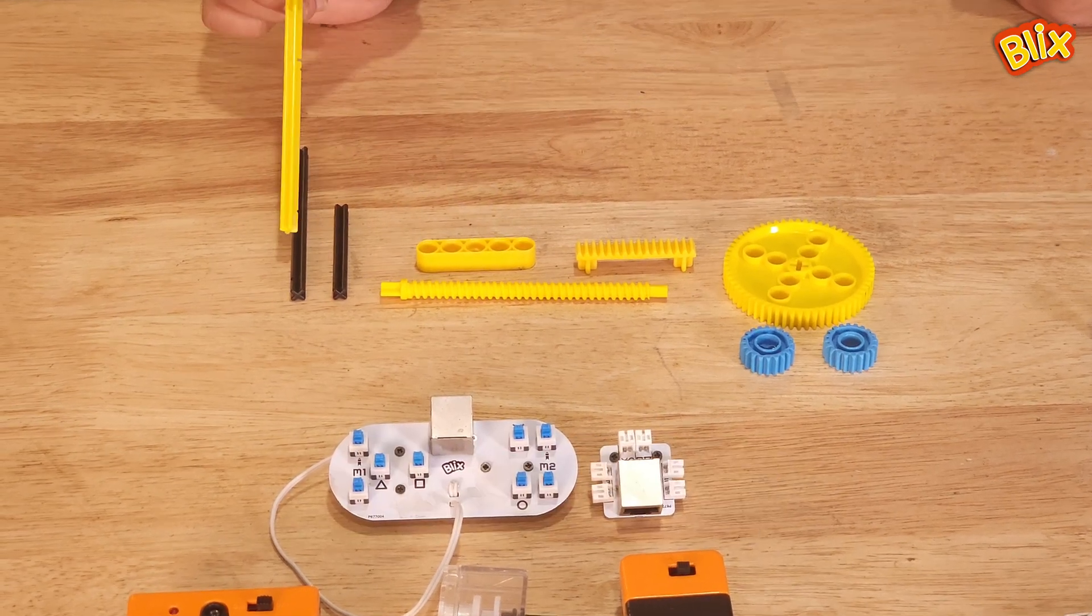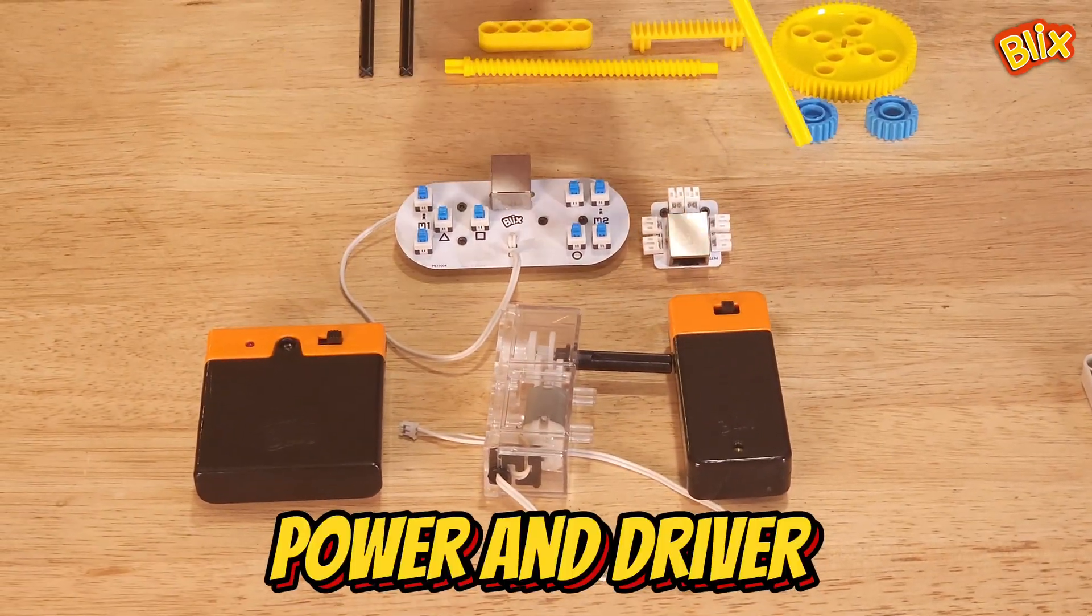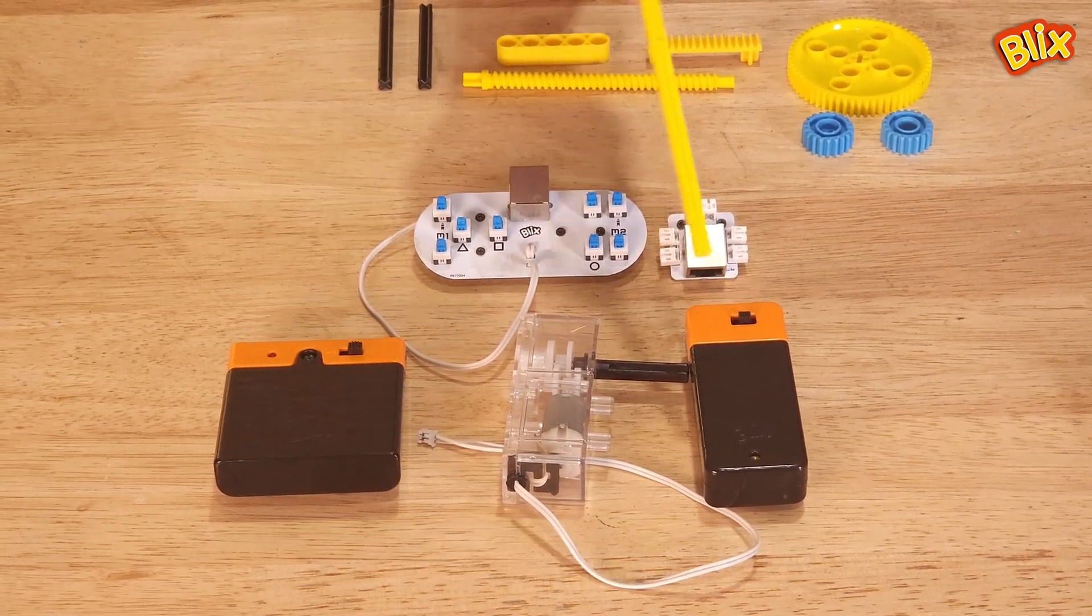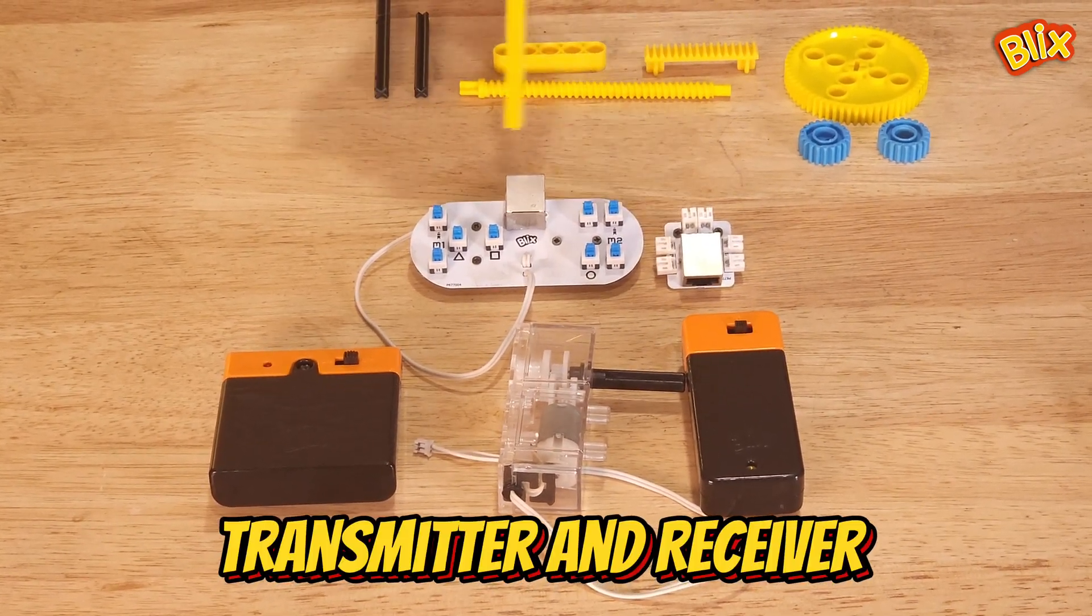A power nut and different shafts. And these are your power and driver mechanisms which consist of a gearbox, a 6V battery box, a 3V battery box, as well as a transmitter and receiver.